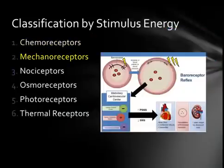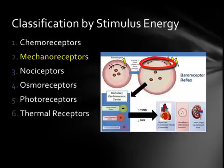Mechanoreceptors respond to the deformation, stretching, or bending of cells. For example, the baroreceptors that detect pressure in the aortic arch are mechanoreceptors that respond to stretching of the arterial wall.